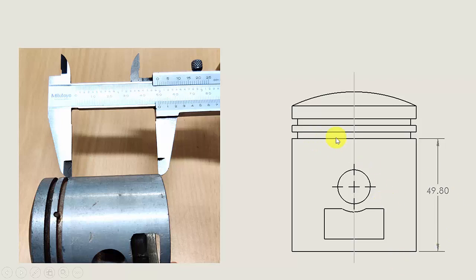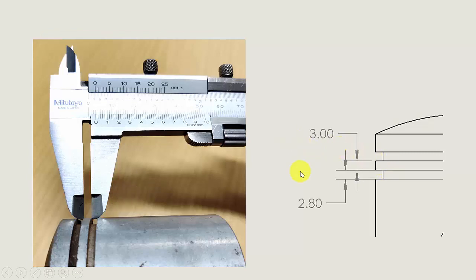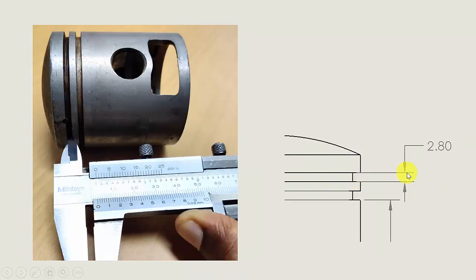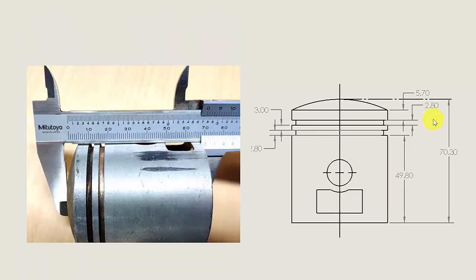First, draw a rough diagram on paper, then using a vernier caliper I am going to measure the dimensions. From the bottom to the piston ring gap the height is 49.80 mm, then the gap for the piston ring is 2.80 mm. The next height is measured as 3 mm. The second gap for the piston ring is again 2.80 mm. Next, from the gap to the top it is measured as 5.70 mm. The overall height of the piston is measured as 70.30 mm.